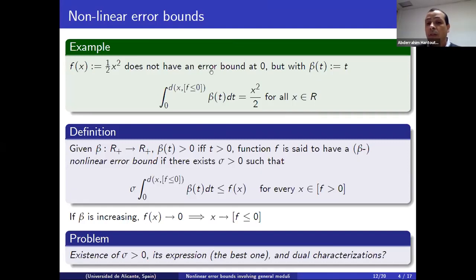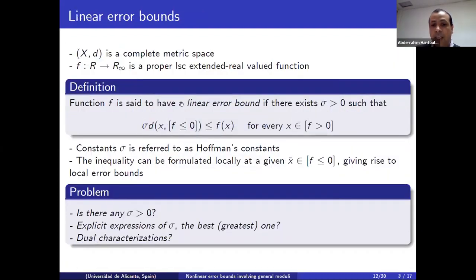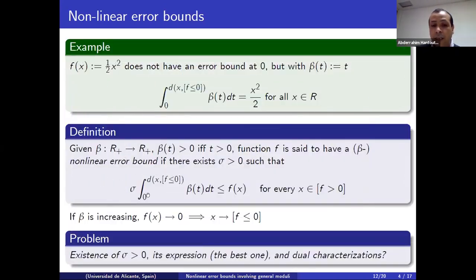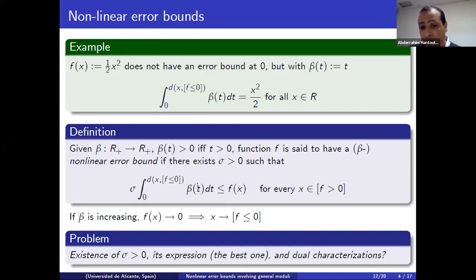This is what we call a nonlinear error bound: the same inequality holds, but instead of considering only the distance, we consider the integral of this modulus. Beta is a modulus — a positive function which takes positive values except at zero, where it is possibly equal to zero. This is the definition of nonlinear error bound, which covers the linear one by taking beta to be the constant one.